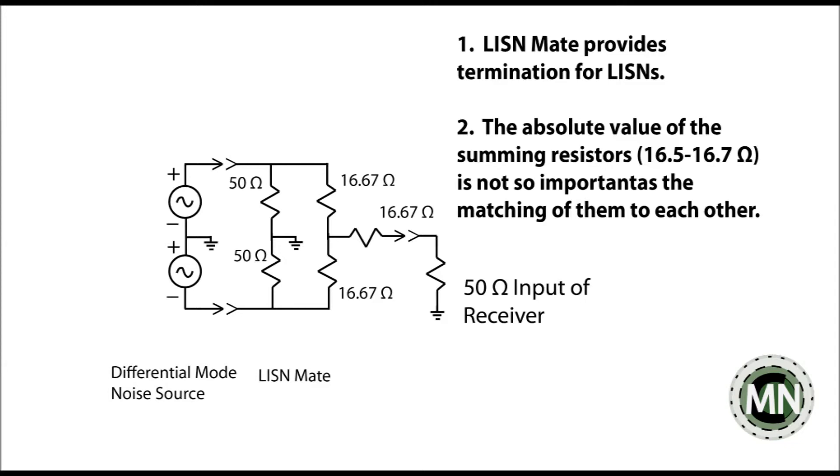To complete the network, we add the third 16 ohm resistor, and that is the output of Lizomate. This output is connected to a 50 ohm input spectrum analyzer, and in this way, the termination impedance of each Lizomate is equal to 50 ohms. For those interested in the mathematical exercise, it is given in the reference paper.